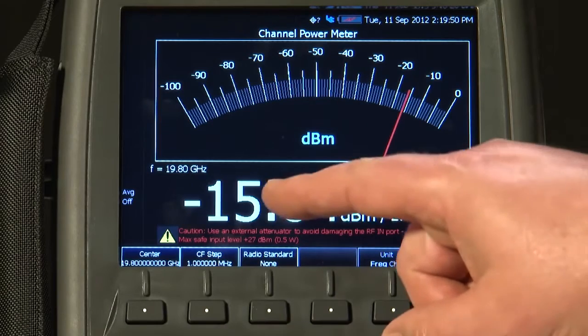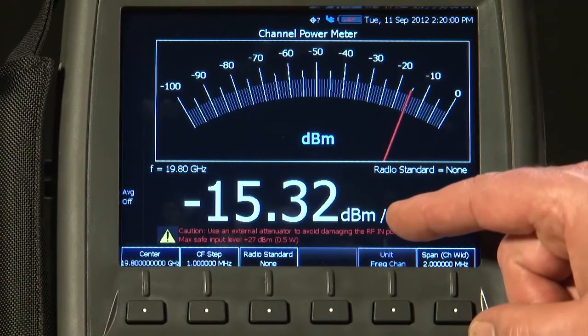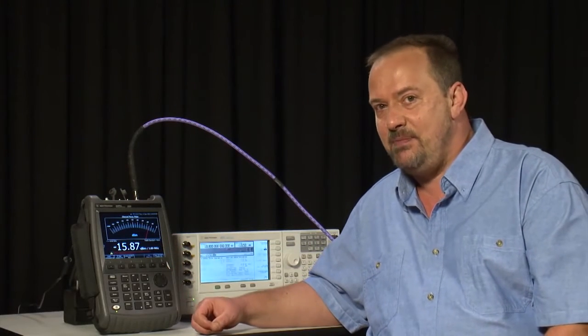And below that, we have got the actual RF power measurement in dBm, and it is saying per 2 MHz. In other words, it is minus 15 dBm in our 2 MHz bandwidth.